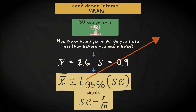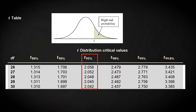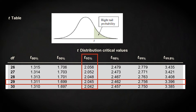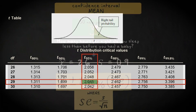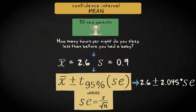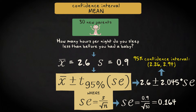What is the T-score for the 95% confidence level? That's dependent on the degrees of freedom, which equals n minus 1 — that is, 30 minus 1 is 29. In the T-table we should look in the column of the 95% confidence level and in the row of 29 degrees of freedom. That gives a T-score of 2.045. The confidence interval becomes 2.6 plus and minus 2.045 times 0.9 divided by the square root of 30, giving an interval from 2.26 to 2.94.